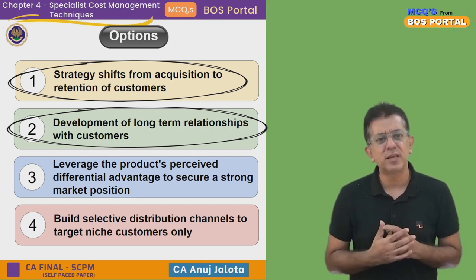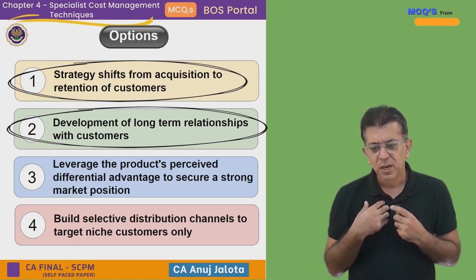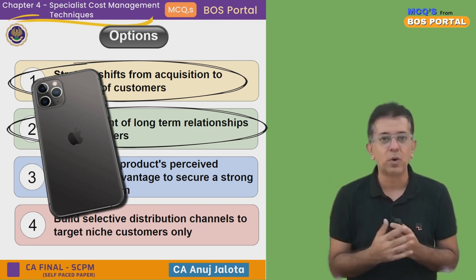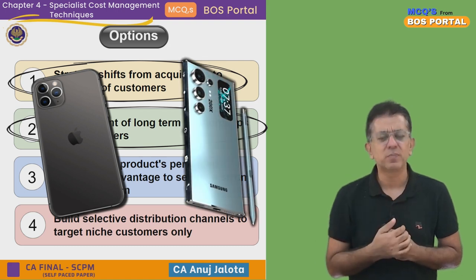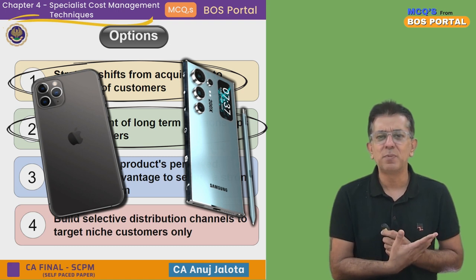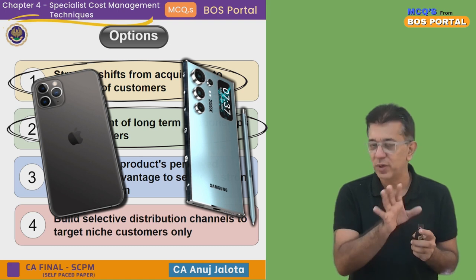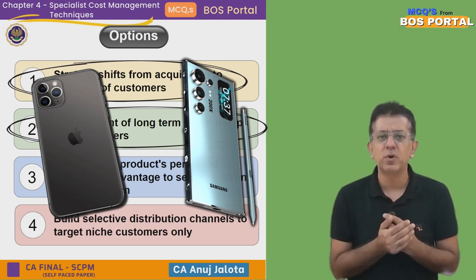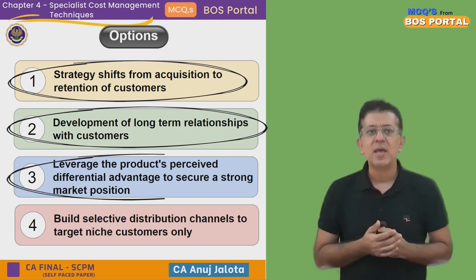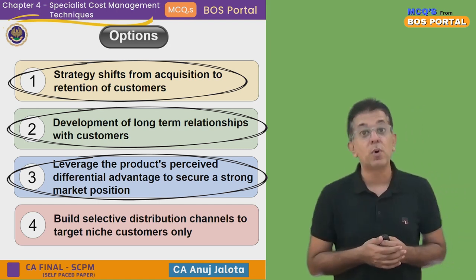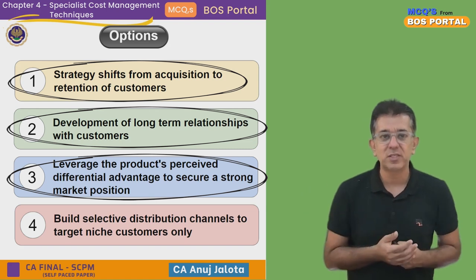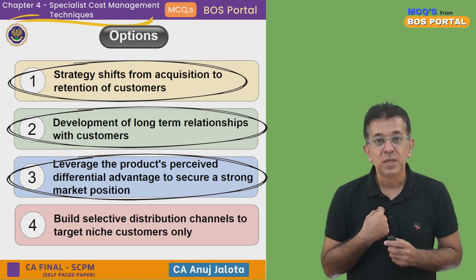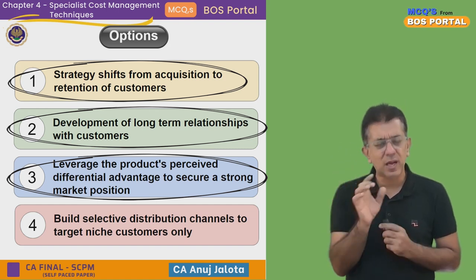What happens is that after some time, people start thinking about trying new products. For example, one of my friends was an Apple user for 15 years, using only Apple products from iPhone 1 through to 15. But recently he purchased the S24 Ultra. I asked him why, and he said he'd been with Apple so long he wanted to try something new. This illustrates that people will eventually want to try something new. As a company, you should try to have long-term relationships with customers. Option three — leverage the product's perceived differential advantage to secure a strong market position — is also correct, because in maturity competition will be intense and proving your product is still better gives you an advantage. So options one, two, and three are all correct strategies for the growth stage.